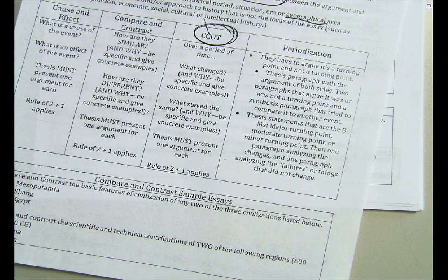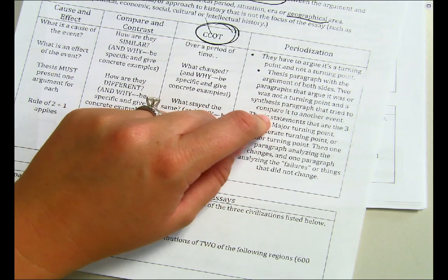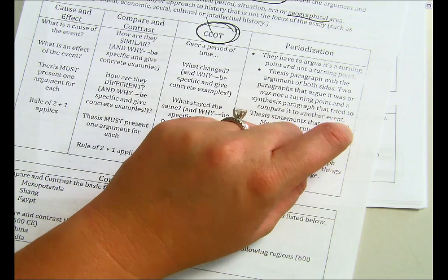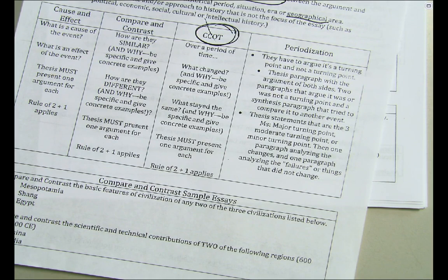For instance, in Period 2, what is a major event that changes everything? Alexander the Great is a great periodization example—he's going to affect the Greeks, the Persians, the Indians. You'd talk about what led to his rise, which is the Peloponnesian War, and then the impact: the conquering of all these empires. That's what periodization is—it's a big picture.